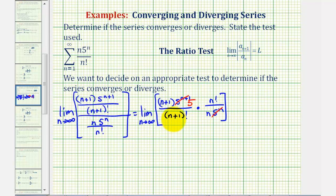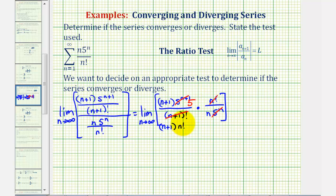Now let's expand n plus one factorial. We can write n plus one factorial — the first factor would be n plus one, the next factor would be just n, since n plus one minus one is equal to n, and the remaining factors would just be n factorial. Notice in this form, n factorial over n factorial simplifies to one, and now we can find this product.